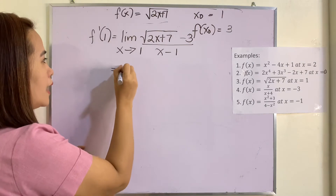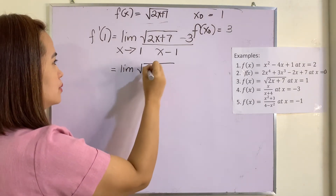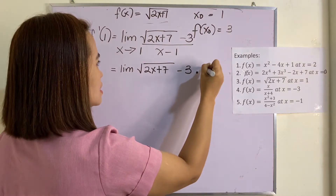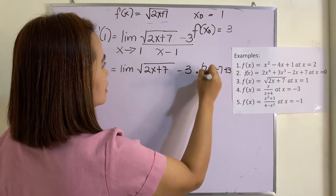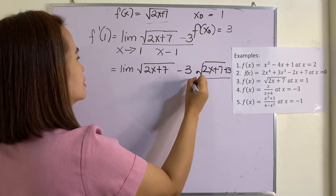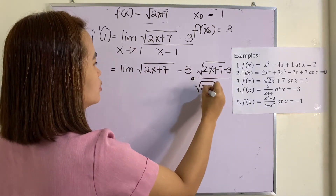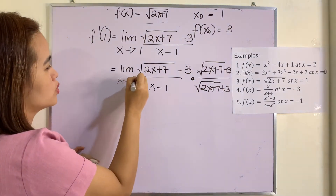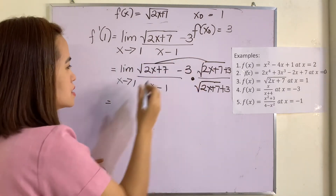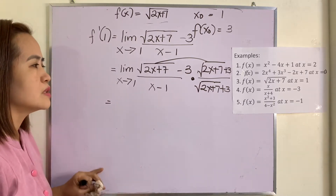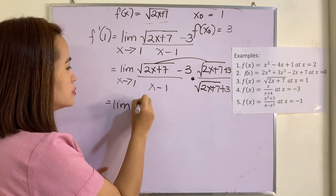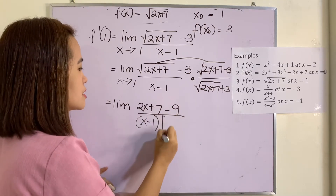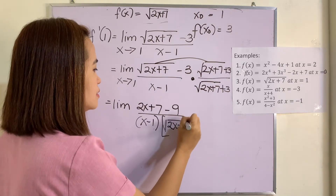We simplify by rationalizing the numerator. We multiply by the conjugate: square root of (2x plus 7) minus 3 times square root of (2x plus 7) plus 3, over square root of (2x plus 7) plus 3. The denominator becomes x minus 1 times square root of (2x plus 7) plus 3, as x approaches 1. Multiplying the numerator: square root of (2x plus 7) times itself gives 2x plus 7, and 3 times negative 3 gives negative 9.